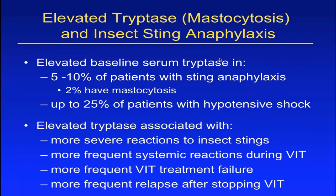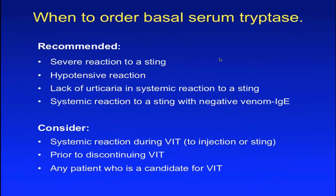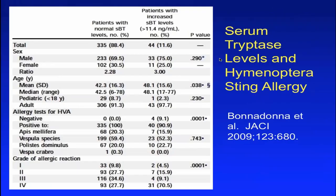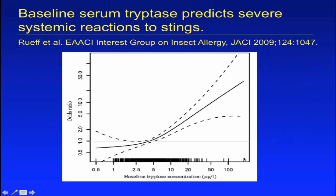We recommend ordering the tryptase certainly when there's been a very severe reaction to a sting, especially if it was hypotensive, if there was an absence of hives, or if all the IgE tests are negative. Mast cell disorders can cause anaphylaxis with no detectable IgE — zero in the normal tryptase group, 9 percent in the abnormal tryptase group.